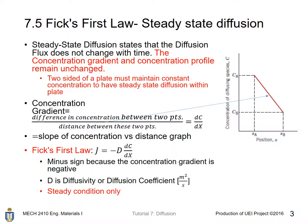For steady-state diffusion to happen within a plate, two sides of that plate must maintain constant concentration to have steady-state diffusion within the plate. If the concentration is not constant...